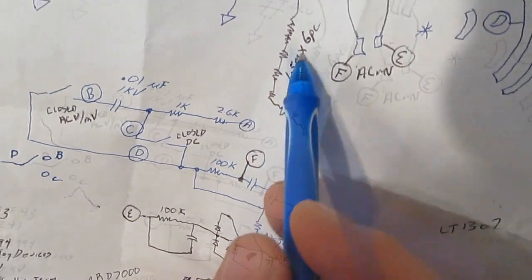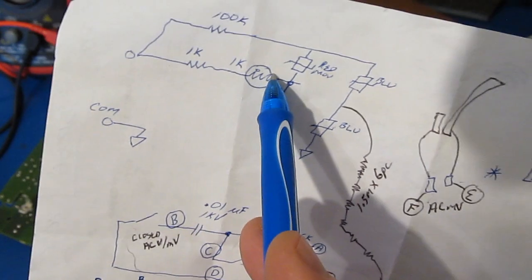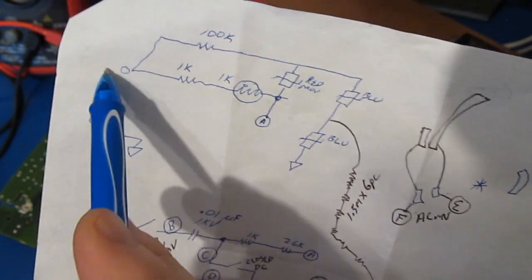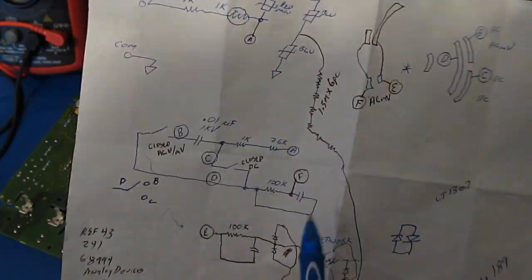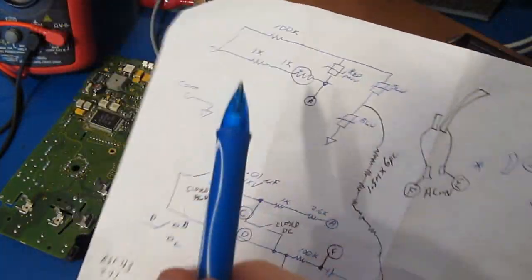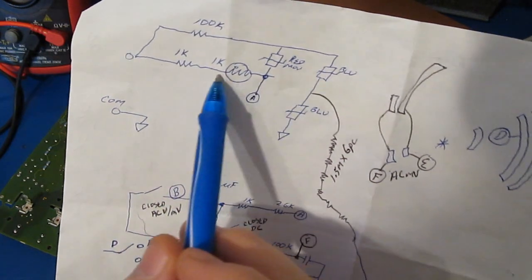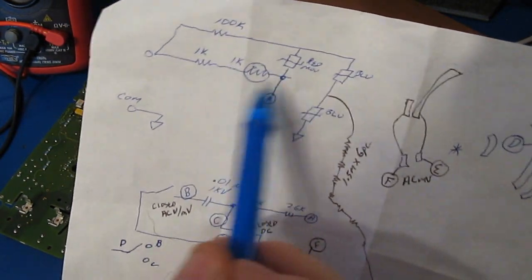And then out through the 1k PTC, through the 1k, into the front. My point of all this is essentially it's not like I drew it originally, where we have the 1k in series with the 1.5k or 1.3k going through a switch through the clamp.